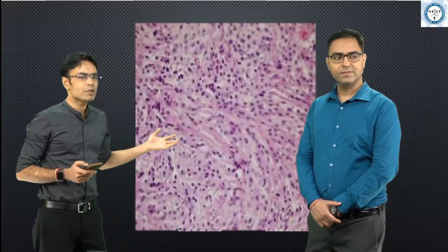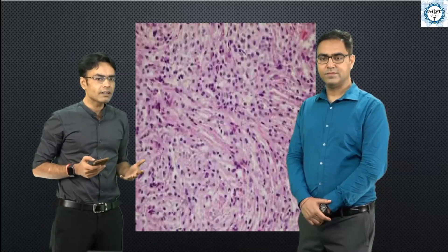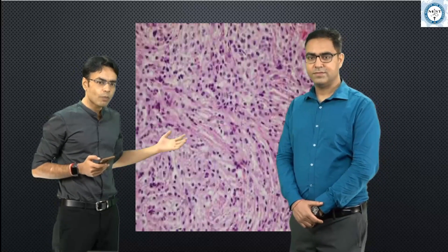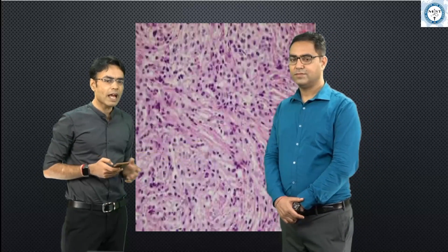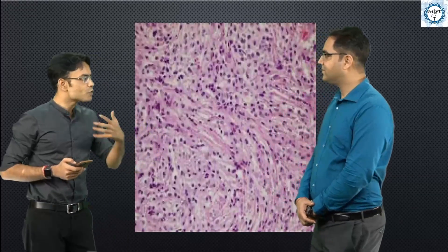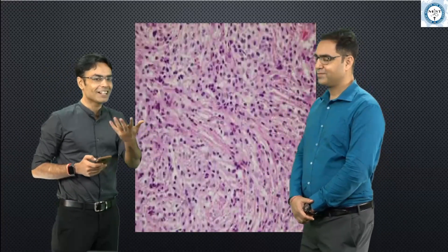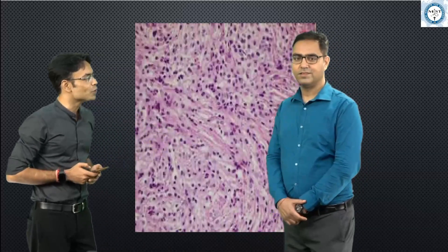The last stage is the fibrotic stage, in which there is a lot of scarring which we see under the microscope. Mikulicz cells and Russell bodies are generally not found here. You can see a lot of inflammatory infiltrate — these small dots are all inflammatory cells — and the elongated cells are fibroblasts which are responsible for the scarring. Now, having seen the pathology of rhinoscleroma, clinically how do we interpret this and what do we do with it?